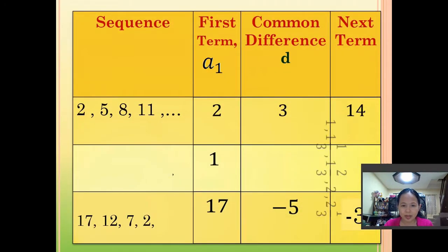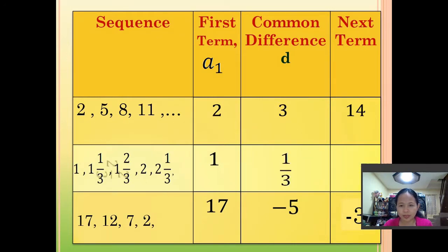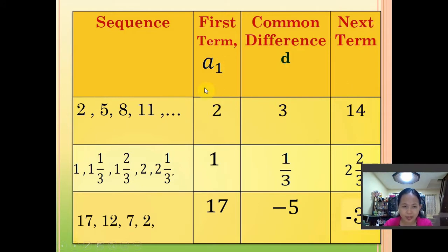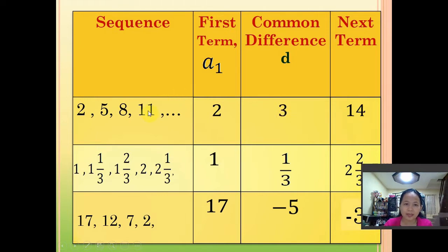So we have a table showing the answers for the previous activity. The first column has the sequences, then first term, common difference, and next term. For the first sequence, our first term is 2. Common difference is 3 — that is, 5 minus 2 is 3, 8 minus 5 is 3, 11 minus 8 is also 3. Since our common difference is 3, we add 3 to 11 to get the next term: 11 plus 3 is 14. So our next term is 14.